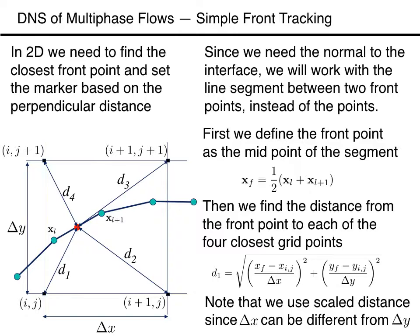Since what matters when we set the value of the grid point is the relative distance compared to the grid size, and we allow the grid spacing in x and y to be uneven, we will scale x and y distances separately by delta x and delta y. Thus, the relative distance from the red point on the front to the grid point in the lower left corner is the square root of the square of (xf minus xij) divided by delta x plus the square of (yf minus yij) divided by delta y.